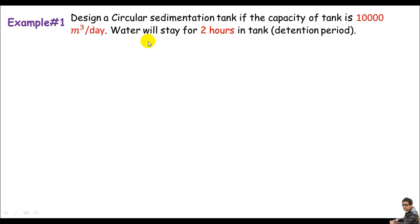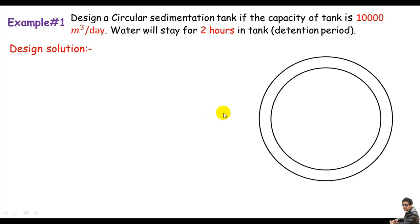And here the design means just to determine the diameter and the depth or the height of the tank. If you see the tank capacity is in cubic meter per day, I just need the capacity in form of volume. And the tank capacity is 10,000 cubic meter per day.